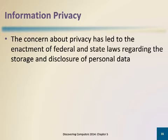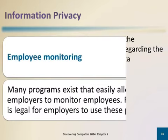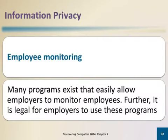Information about privacy has led to the enactment of federal and state laws regarding the storage and disclosure of personal data. Page 233 in your textbook provides a listing of the major U.S. government laws concerning privacy. Employee monitoring involves the use of computers, mobile devices, or cameras to observe, record, and review an employee's use of technology, including communications such as email messages, keyboard activity used to measure productivity, and websites visited. Many programs exist that easily allow employers to legally monitor employees.